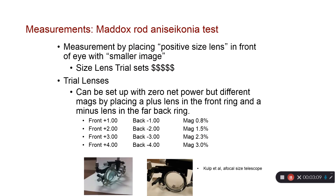You can also use trial lenses to test whether magnification is the major cause of symptoms. This is done using two sets of lenses — one on the front and one on the back. If you put a plus one lens on the front and a minus one on the back, you create a magnification of 0.8%. Because both lenses have equal power, net power is essentially zero. But the front lens creates more magnification. Increasing to plus/minus 2 increases magnification to 1.5%, and plus/minus 4 increases it to 3%.